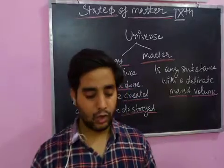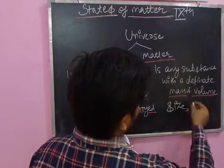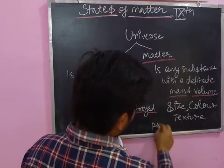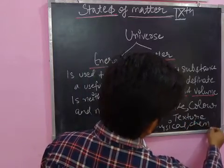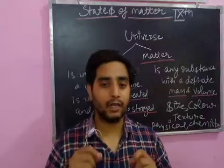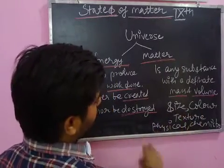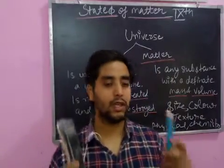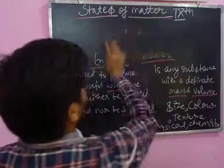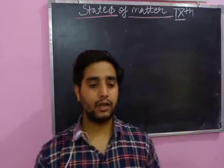The different matters around us vary in size, color, texture, physical property, and chemical property — these differ almost all matter. There are three states of matter generally, and I will describe two new states of matter here as well. For example, a chalk holder and a duster have different shapes. So we have different types of matter around us.